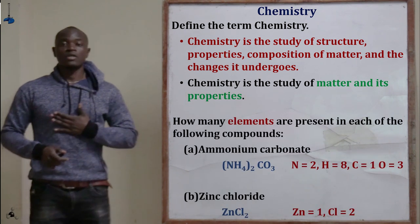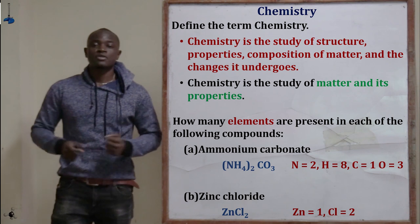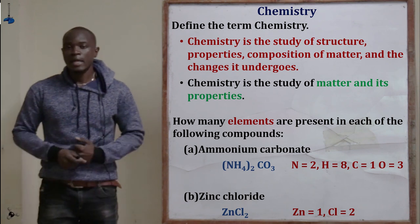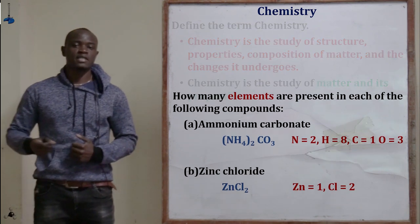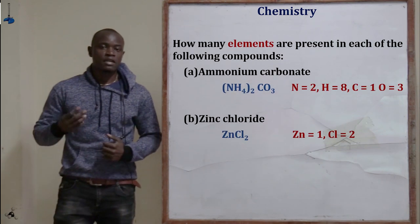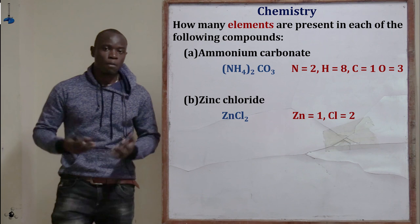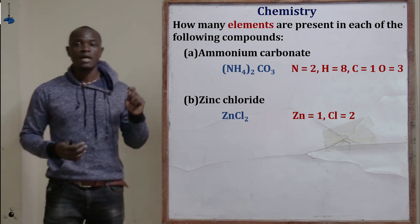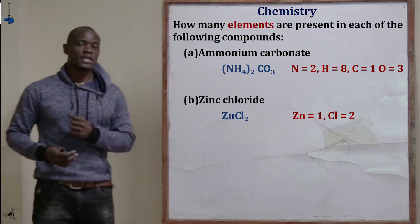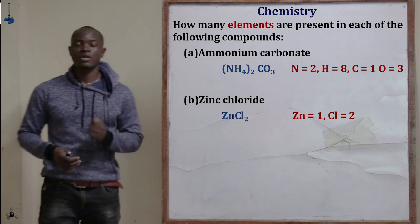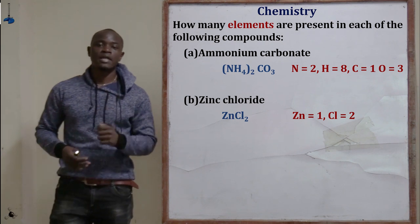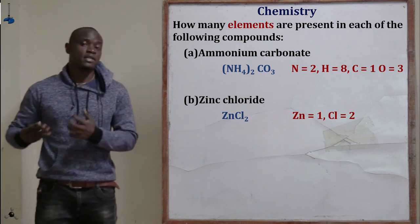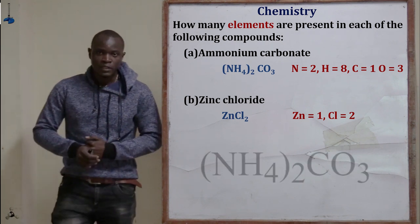Now let's go to the second question. The second question asks: how many elements are present in the following compounds? The first compound is ammonium carbonate. So how many elements are present in ammonium carbonate?